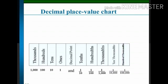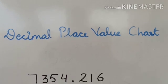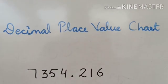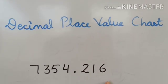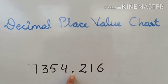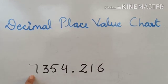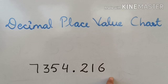Let us learn how to mark the places for a decimal number. Here the number is 7354.216. It is the integral part and it is the decimal part.